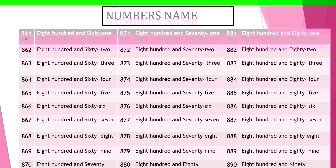Here the numbers from 861: 861, 862, 863, 864, 865, 866, 867, 868, 869, 870. Yes, very good students. You can count the numbers from 861 to 870.